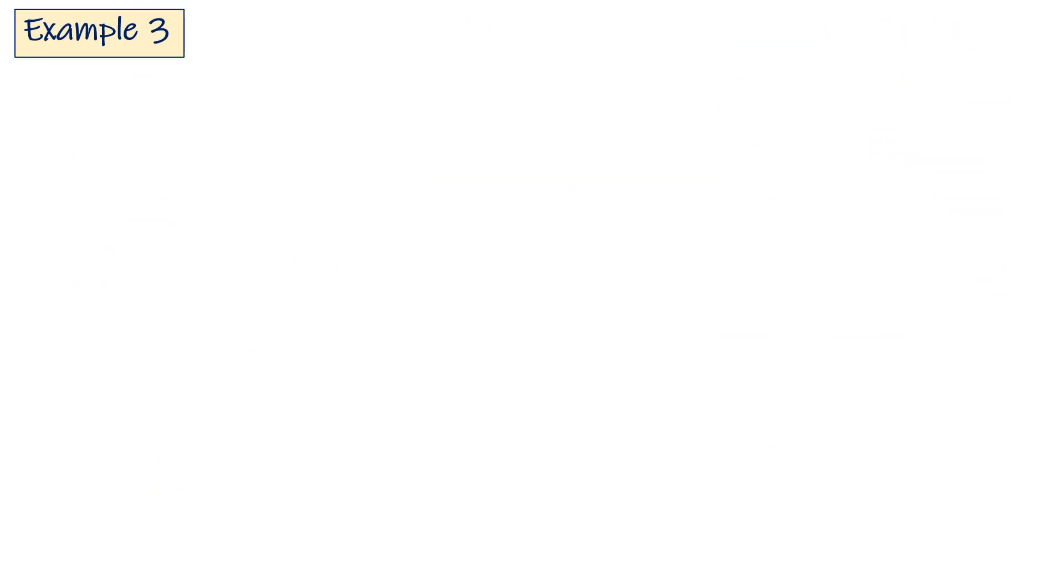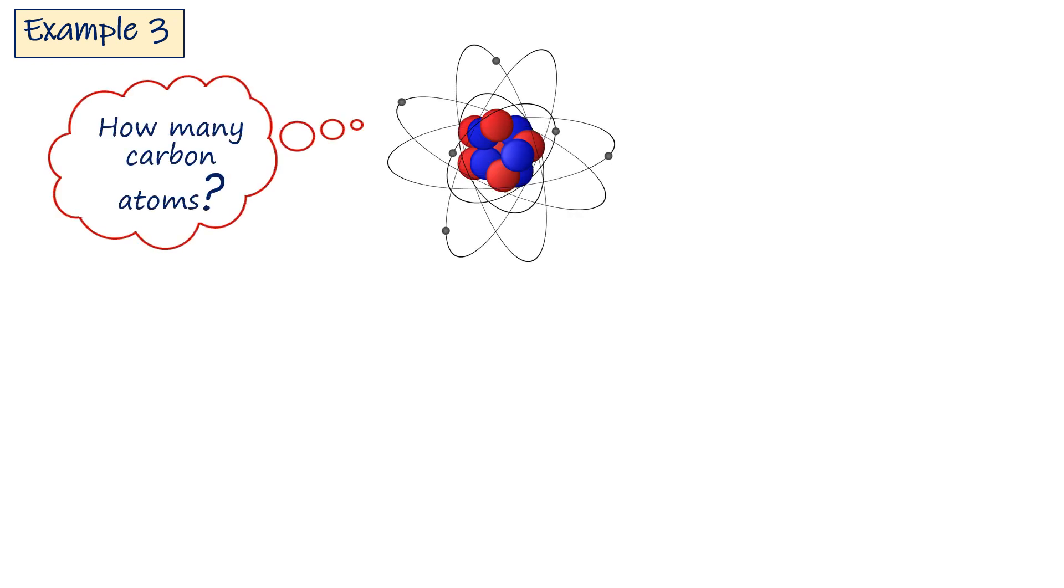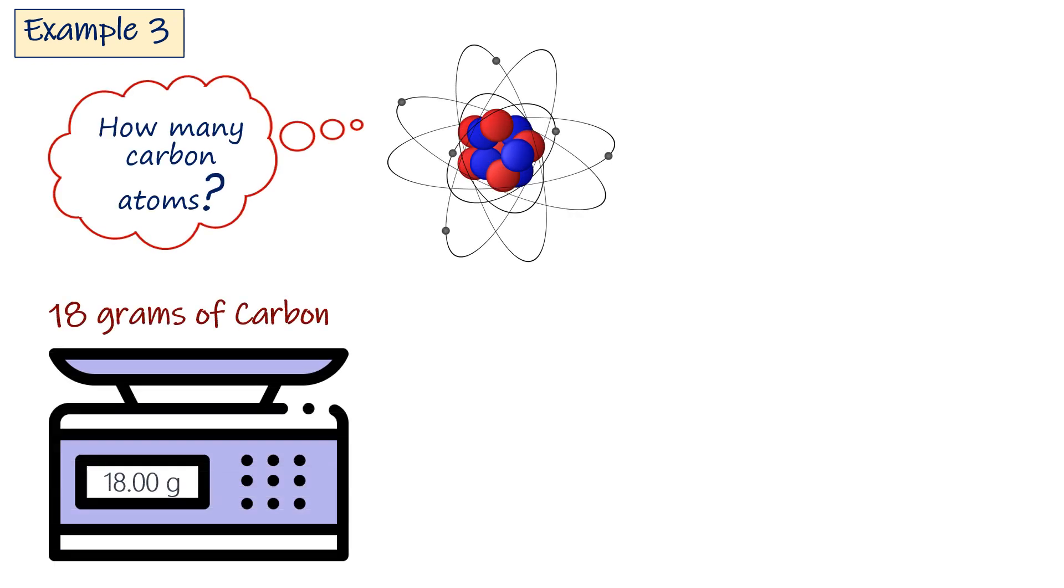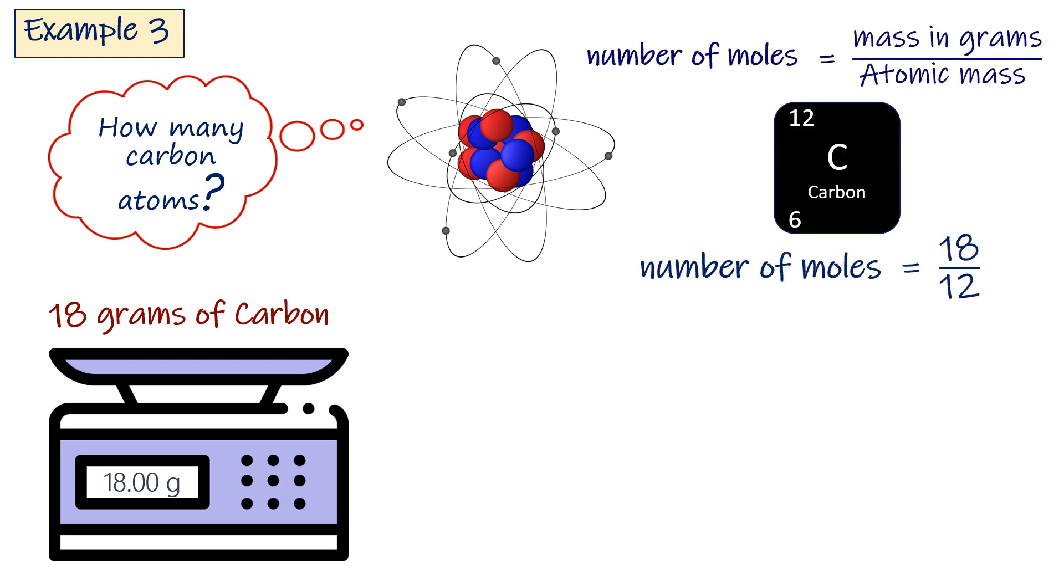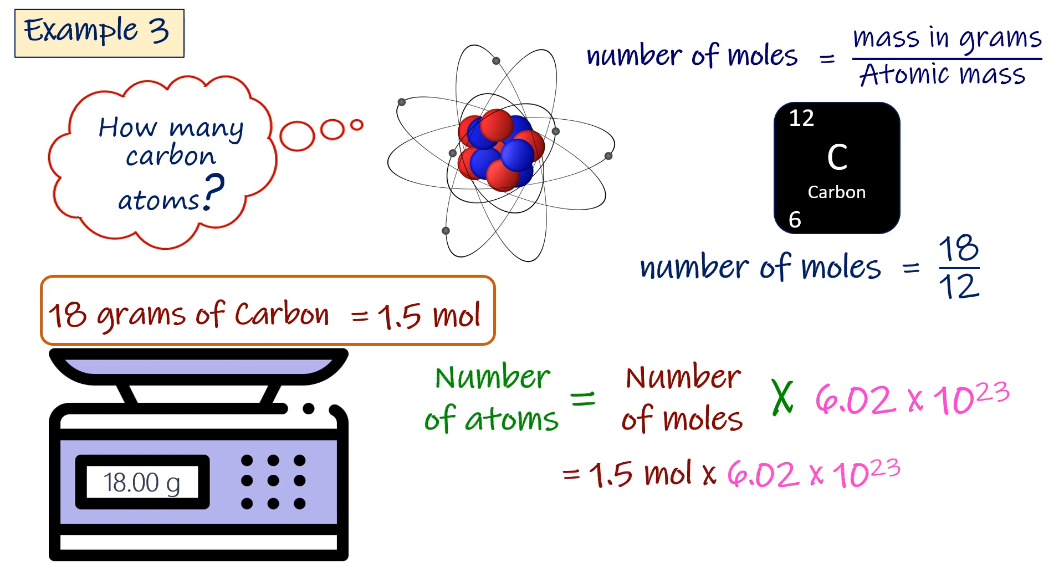Example 3. How many carbon atoms are there in 18 grams of carbon? First you need to get the number of moles of carbon. Number of moles equals the mass of carbon divided by its atomic mass. In 18 grams of carbon we have 1.5 moles. Then multiply the number of moles by Avogadro's number to find the number of carbon atoms. In 18 grams of carbon there are 9.03 times 10 to 23 atoms.